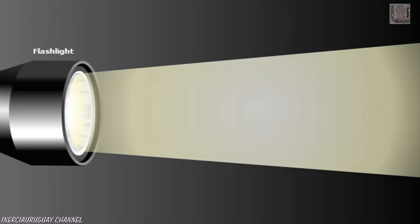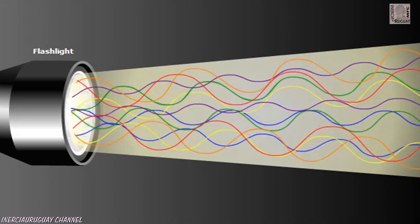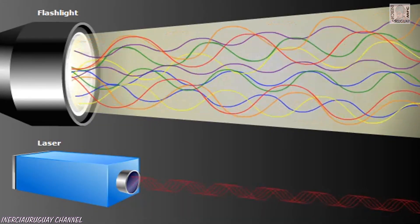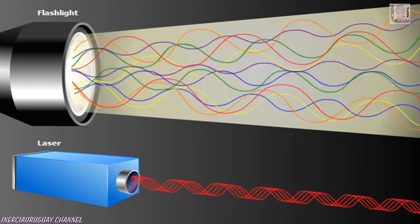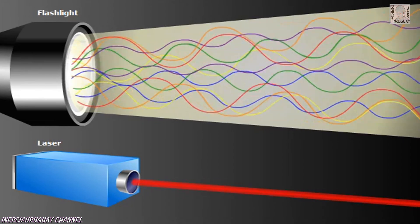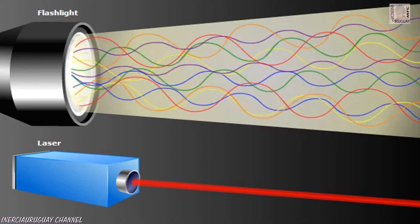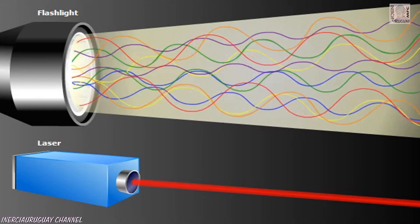An ordinary light source produces many different wavelengths of light that go off in all directions. A laser is able to generate light waves of a single wavelength all in step with each other and all traveling in the same direction. This makes laser light pure in color and extremely intense.